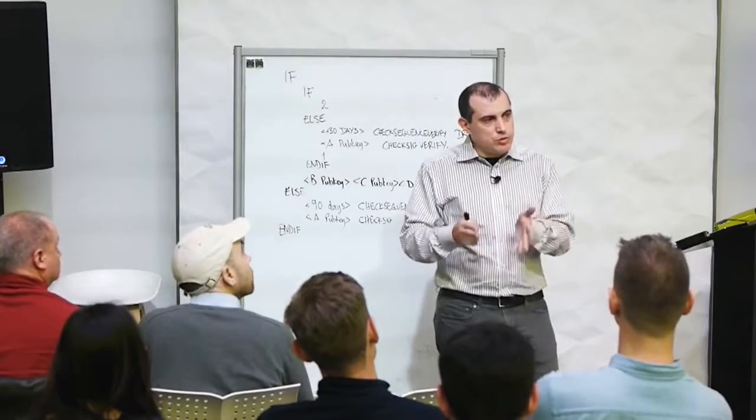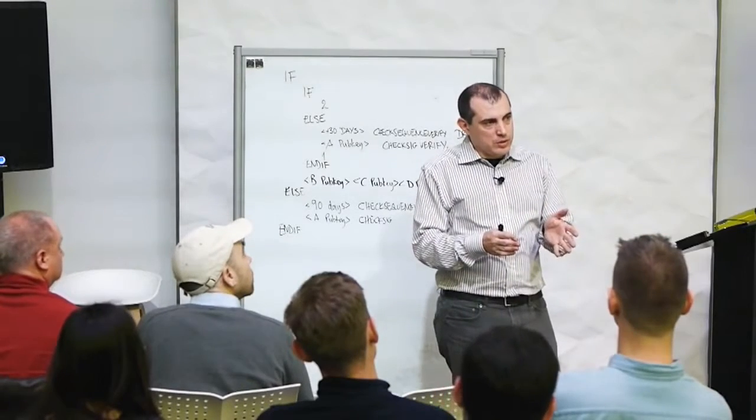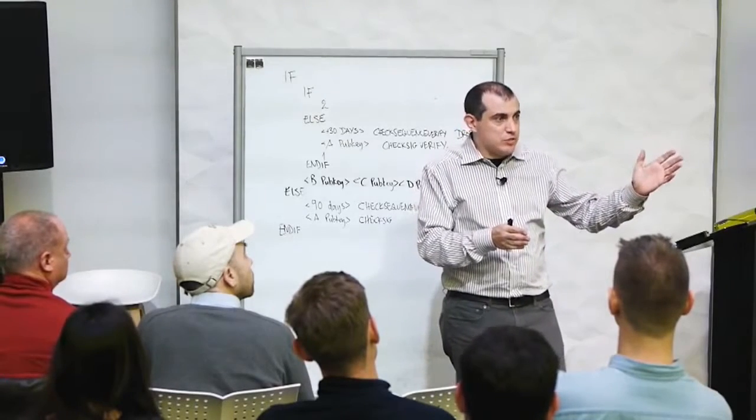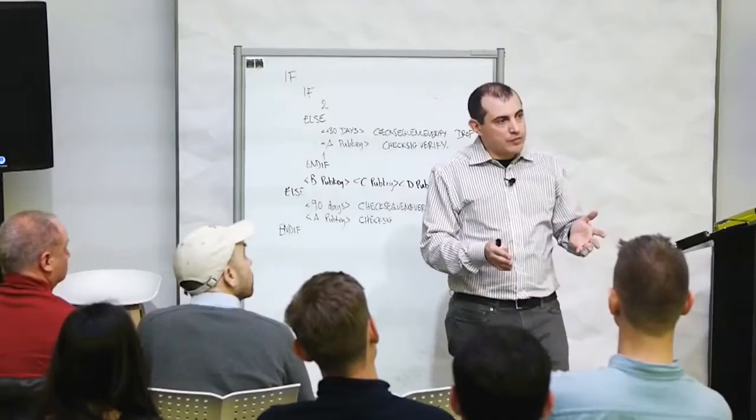If you make it valid in fewer cases, new nodes will evaluate that and be more strict in their evaluation. Old nodes will accept it because it is still valid by the old rules. That is called a soft fork.